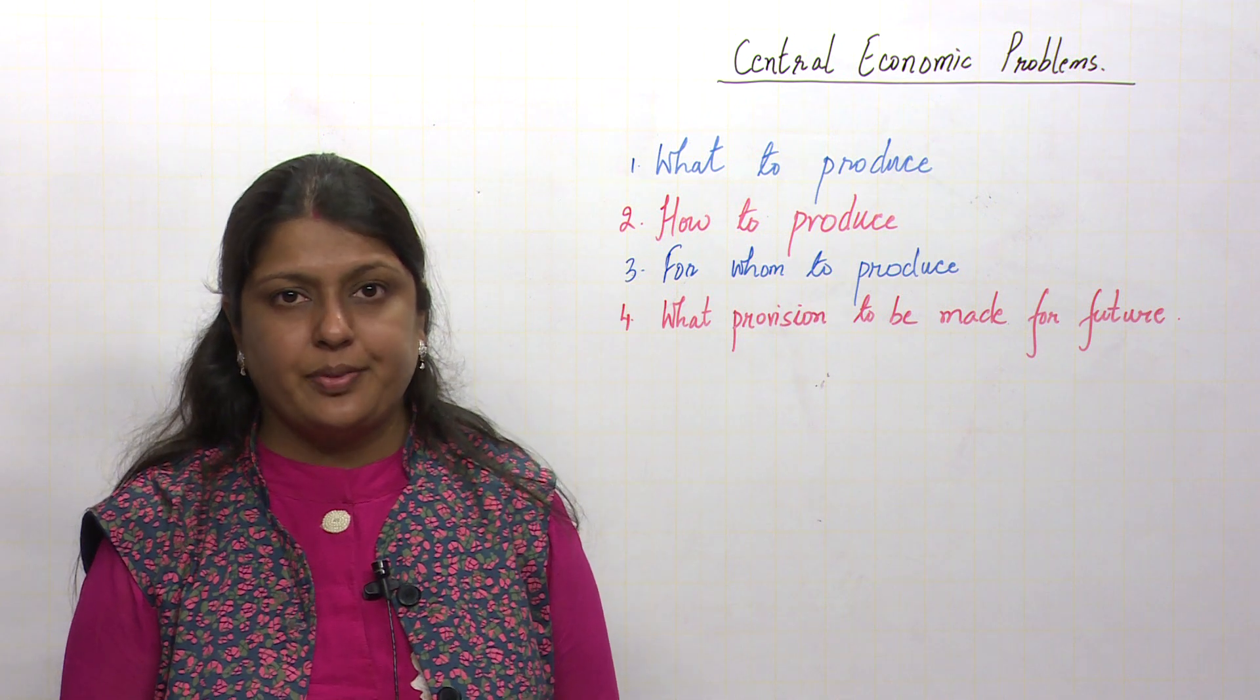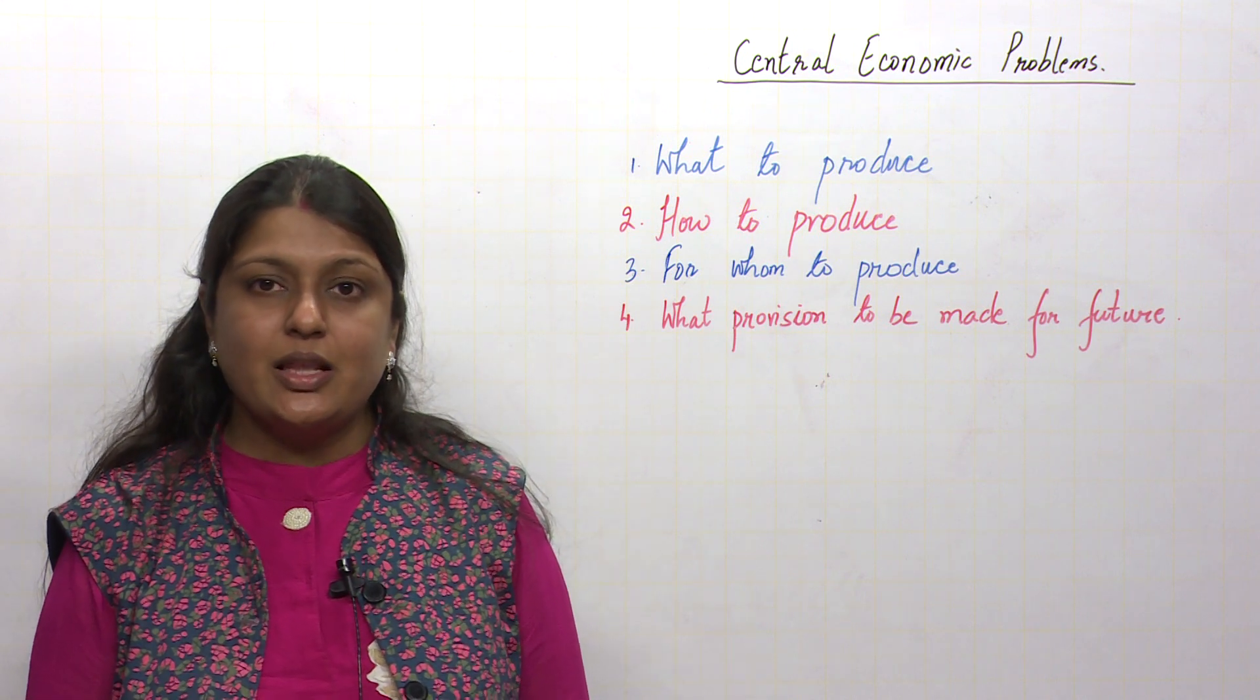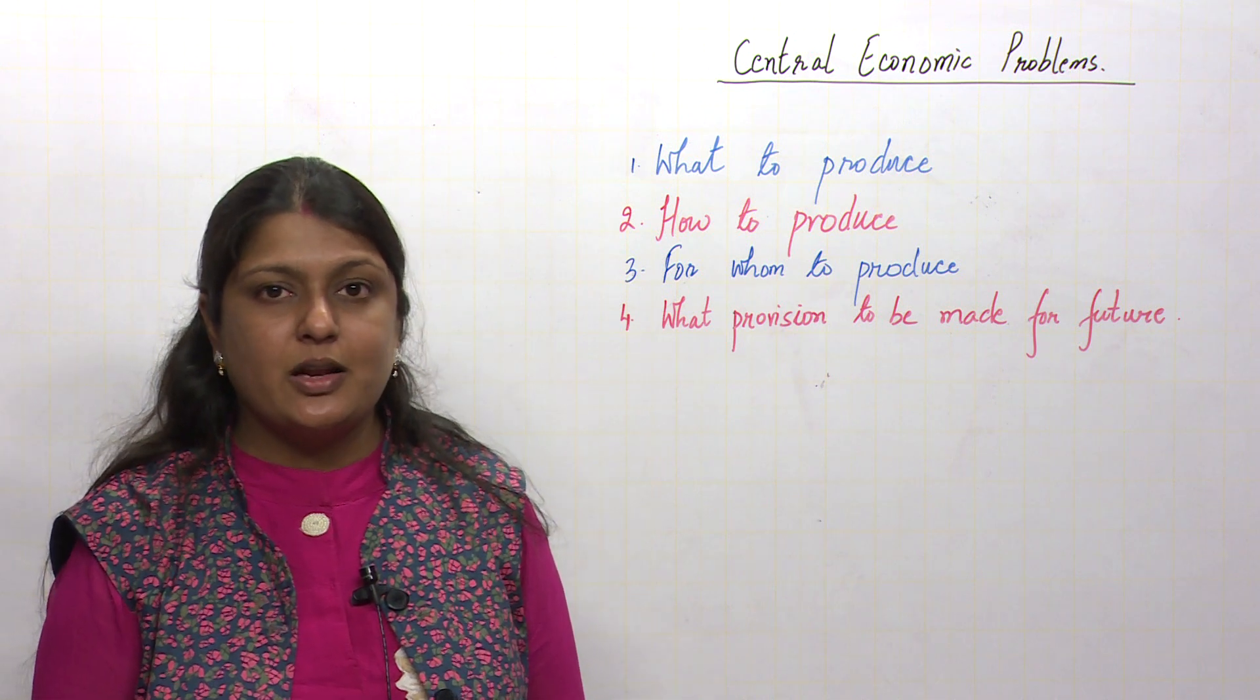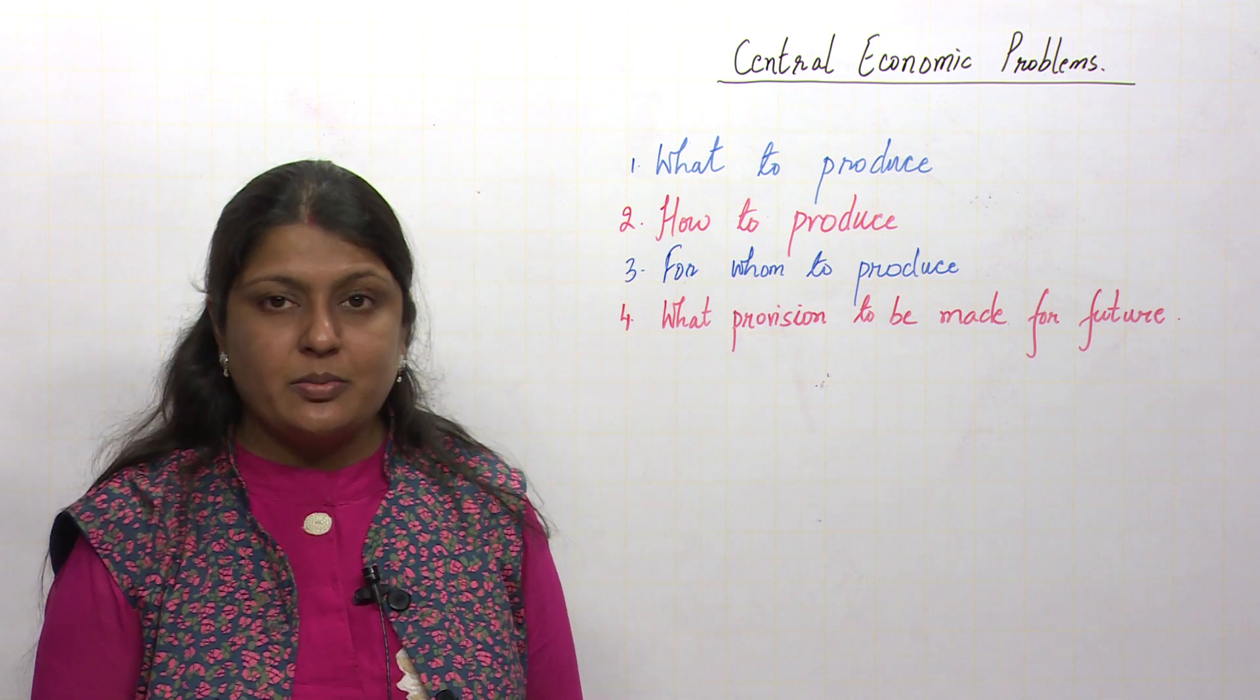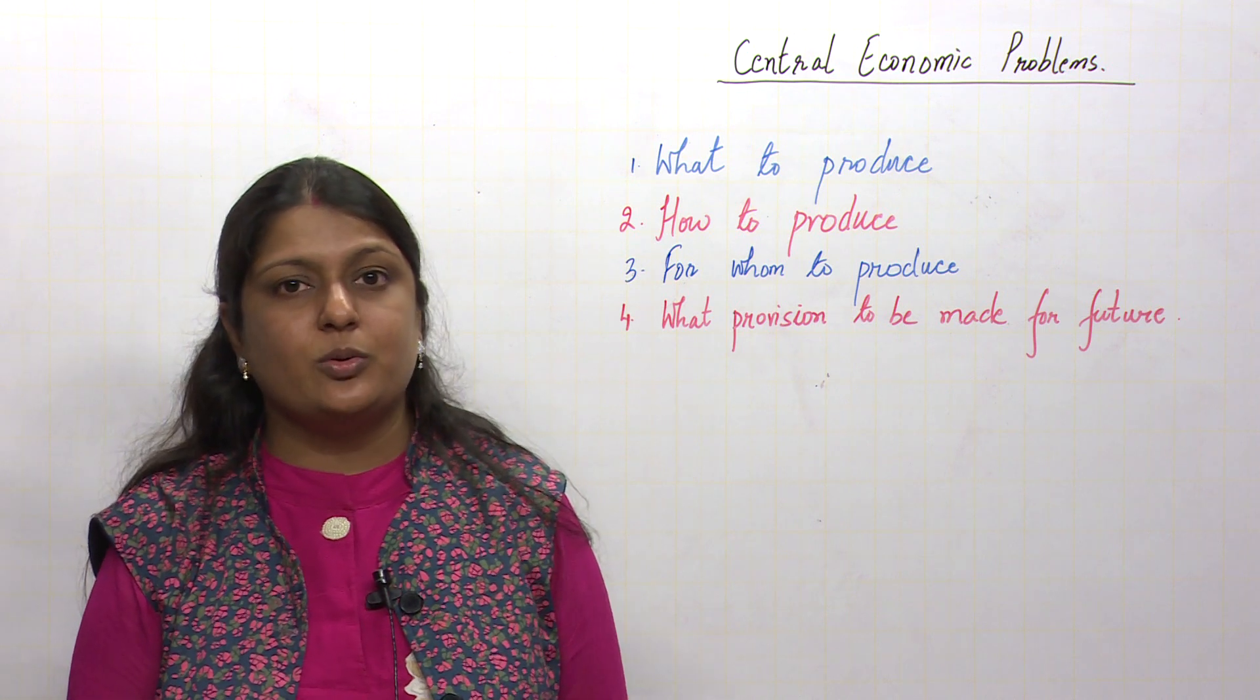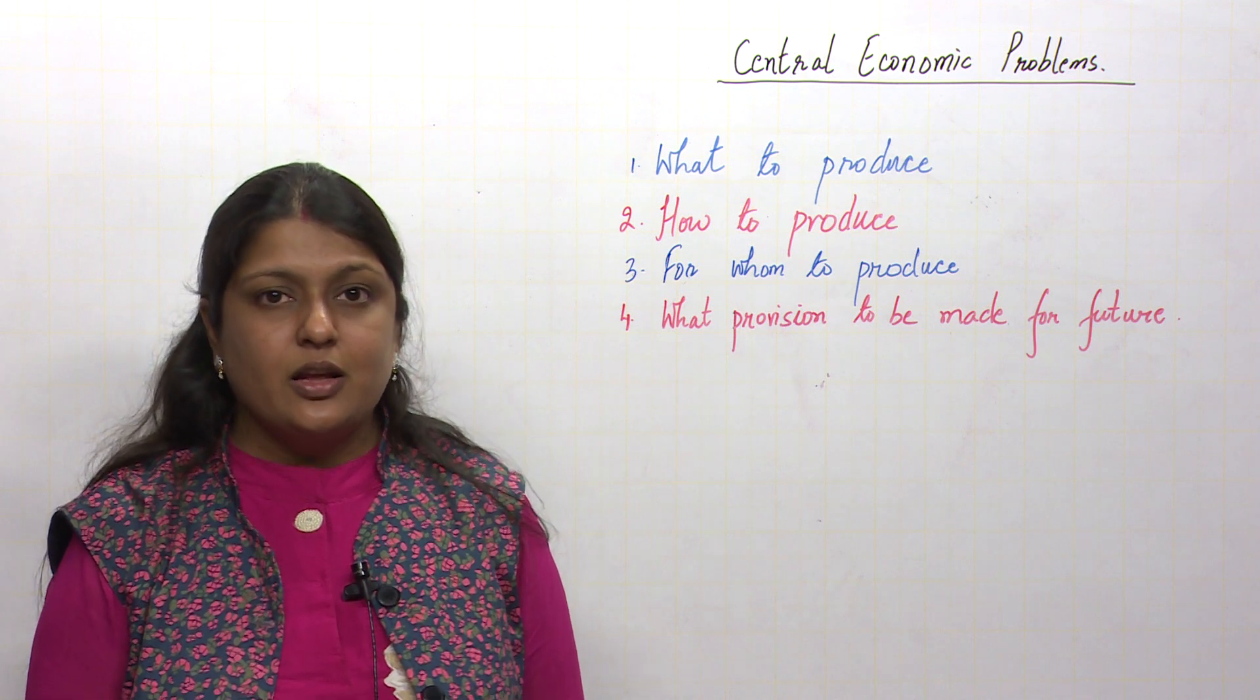The first problem is what to produce. We need to decide what to produce. This means should we produce product A or product B, product X or Z, or a combination of products. If we have limited resources, we need to decide what to produce.